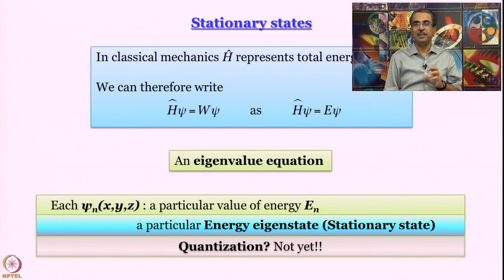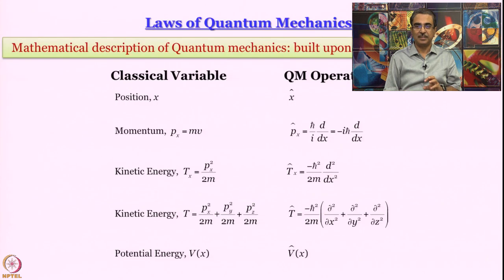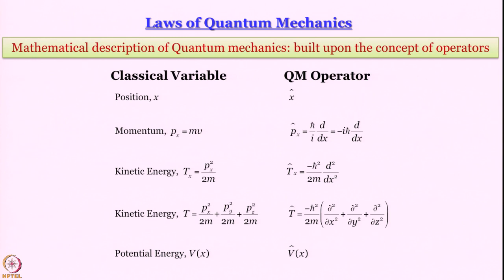From here, the postulates of quantum mechanics were formulated. Here we have called them laws of quantum mechanics. The first postulate is that wave function contains the information about not just the energy, but possibly about everything. There should be some wave function that contains the information about whatever physical observable that we are looking for. And correspondingly, there must be an operator for each and every physical observable.